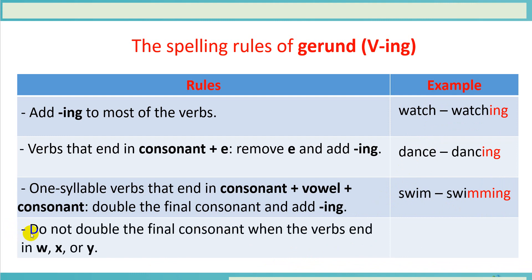Rule number four: do not double the final consonant when the verb ends in W, S, or Y. For example, the verb play — the gerund is playing.